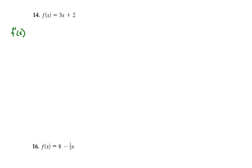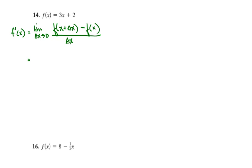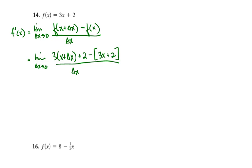Let's see if that works. So we're looking for f prime of x, and that is the limit as delta x approaches 0 of f of x plus delta x minus f of x, all over delta x. We want to plug in x plus delta x wherever we see x in the original function. So we have the limit as delta x approaches 0 of 3 times x plus delta x plus 2, then minus the function f of x, which is 3x plus 2 — I should put that in parentheses. That's all over delta x.